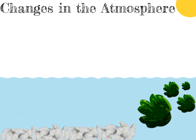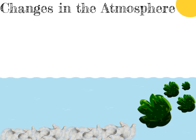Dead sea creatures on the sea floor, under immense pressure for a long time, can turn into fossil fuels such as oil and natural gas. So some of the carbon dioxide that was in the Earth's early atmosphere was also eventually locked up in fossil fuels.